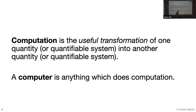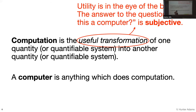What's interesting about this definition is that the word 'useful' is required. The transformation must be useful. But utility depends on your application. If there is something on the desk affecting some transformation of quantities, if that transformation is useful to me, then that thing is a computer for me. If it's not useful to you, then it is not a computer to you. The answer to 'is this a computer?' is subjective—it depends on how useful the transformation is for your particular application.